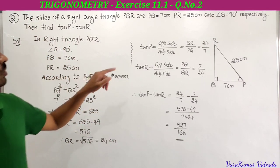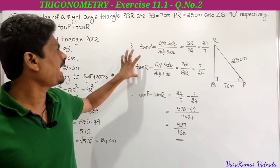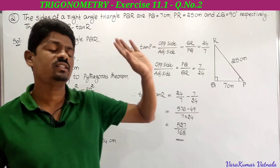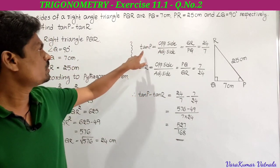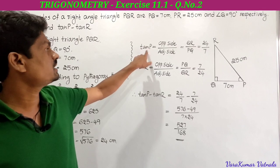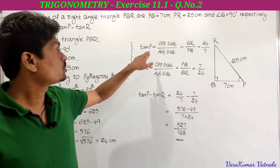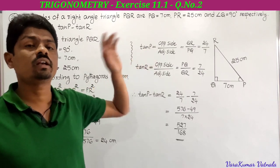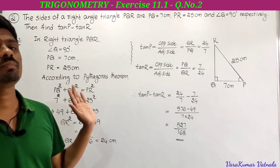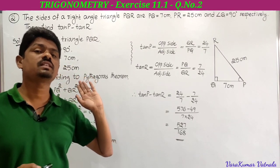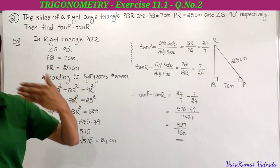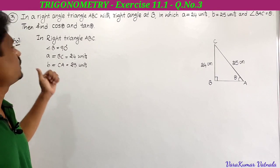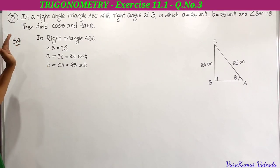So tan P minus tan R equals 527 by 168. You must concentrate on the angle — if the angle changes, then the opposite side and adjacent side change. That is very important. This is the second problem in exercise 11.1.